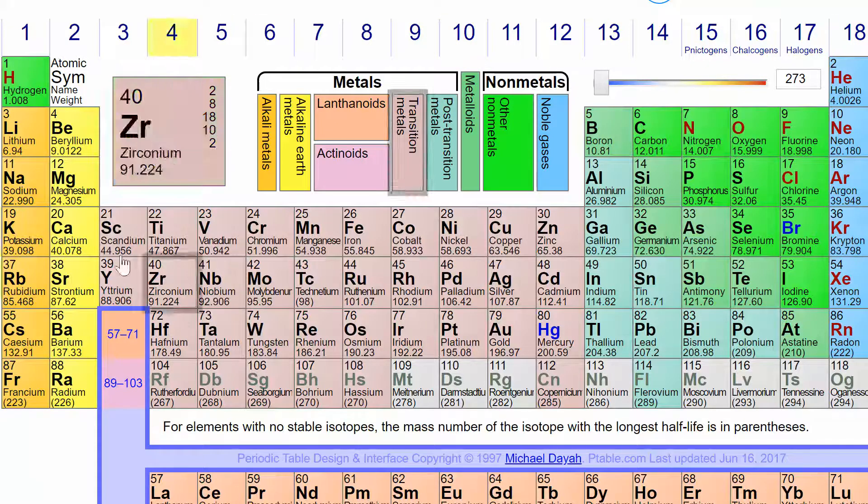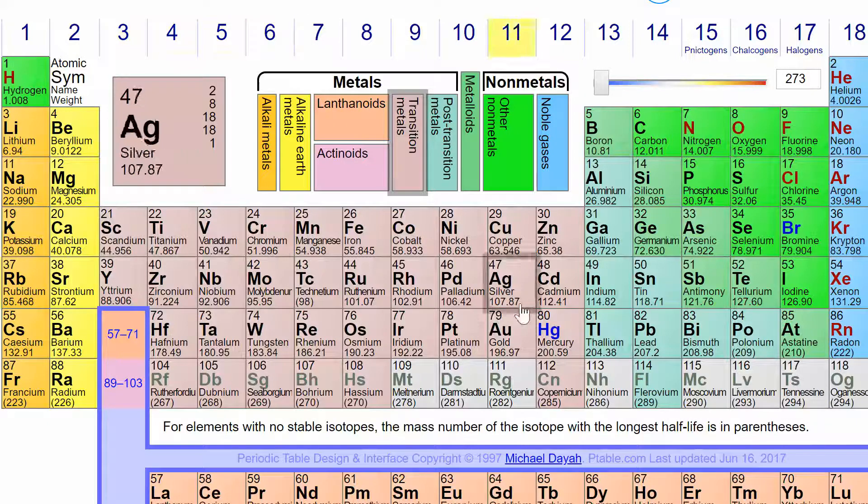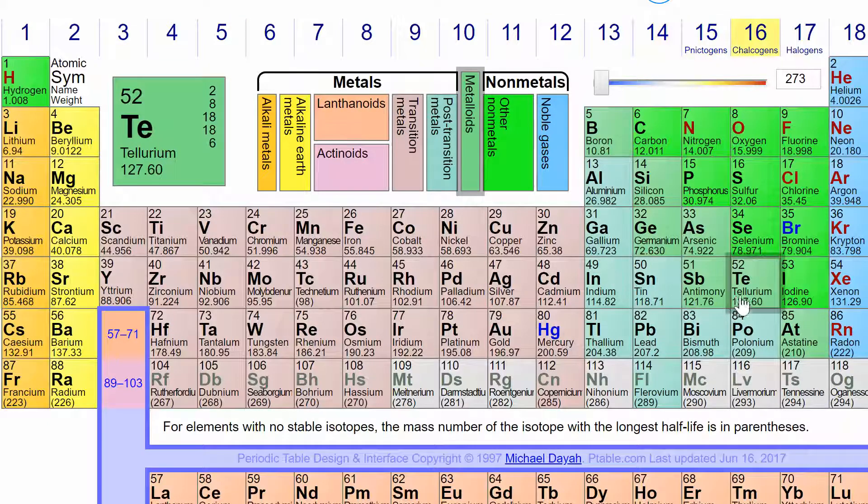So that's krypton, right? And then we're in row five, so we've got 5s2. D starts one below whatever row you're in. So this is four. There's 10 steps over here, 4d10, and then 5p four.